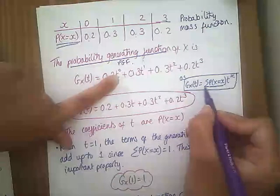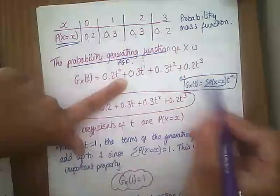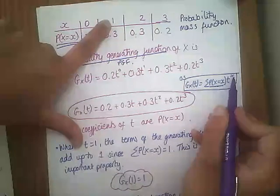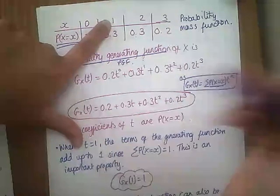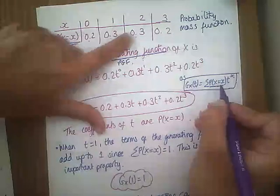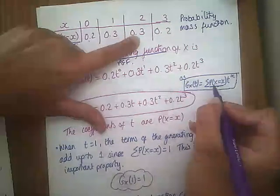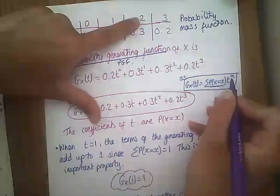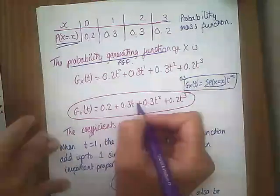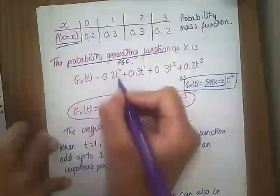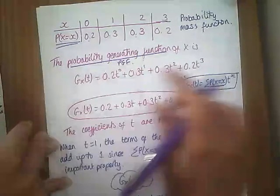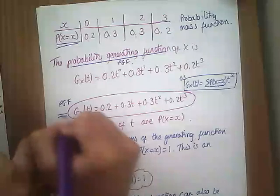The t is just in that position so that we can raise it to the power — that's all it means, it's just a dummy placeholder. So simplifying: t to the power of 0 is 1, so that becomes 0.2. t to the power of 1 is just t. So this whole probability generating function becomes 0.2 plus 0.3t plus 0.3t² plus 0.2t³.